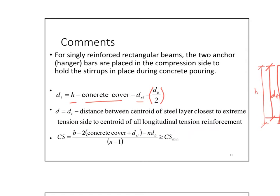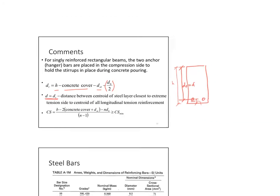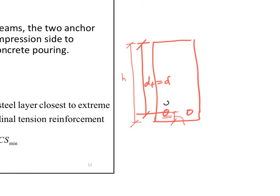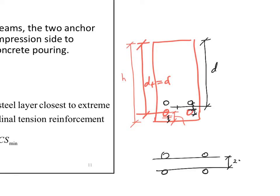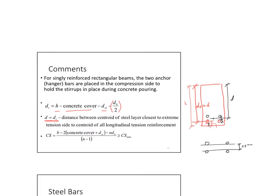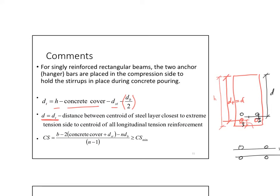For two layers of bars, d = h minus concrete cover, minus d-stirrup, minus one full bar diameter, minus half the distance between the two layers. Normally the spacer between the upper and lower layer is 25 mm. You must examine the section to determine whether d equals dt or is adjusted to the centroid of all the rebars.